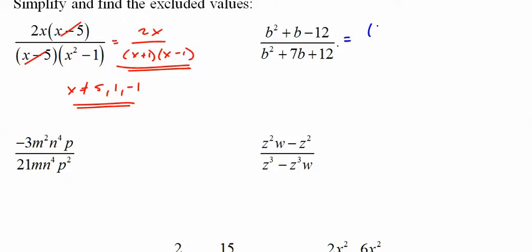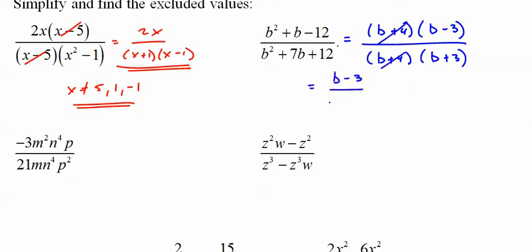We get b plus 4 times b minus 3, b plus 4 times b plus 3. Cancel, cancel. There's our answer: b minus 3 over b plus 3. x cannot equal negative 4, negative 3.